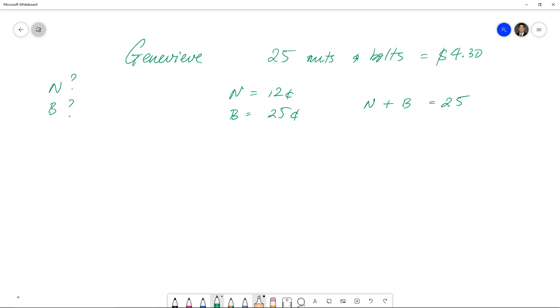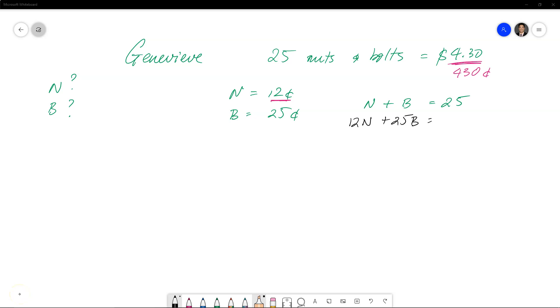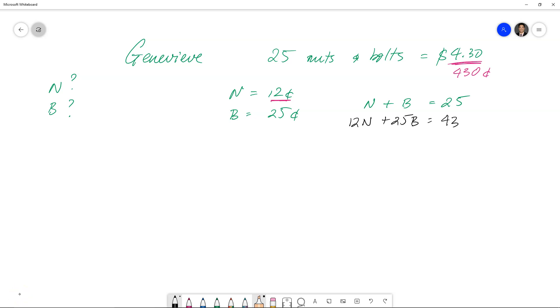So we could see that the first one nuts and bolts is equal to 25, that's the quantity. What we also know is, the one thing I want to point out is that we've got cents and we've got dollars. So you'd want to make sure that the unit of measurements are the same. So I'm going to convert this to cents to make it consistent. So what we end up having that 12 cents per nut and then 25 cents per bolt is going to add up to 430 cents.